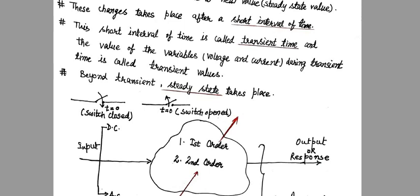Now I have mentioned here the switch is closed at t=0 or the switch is opened at t=0, but it means the switch can be closed at any time or the switch can be opened at any time. The time may be t=0 or t=5 milliseconds or may be t=infinity, any time.